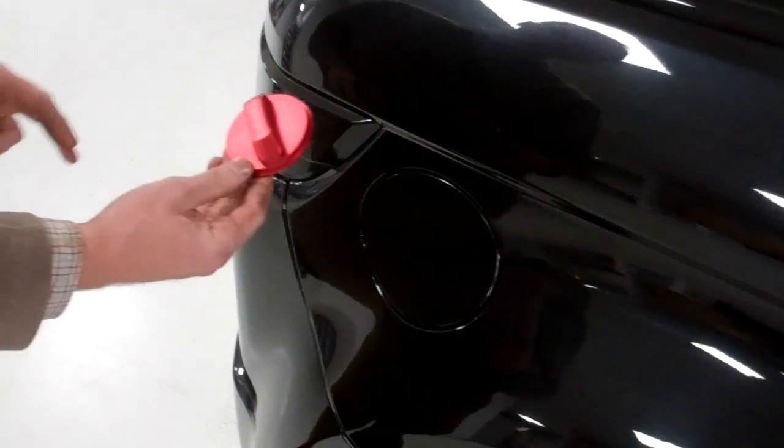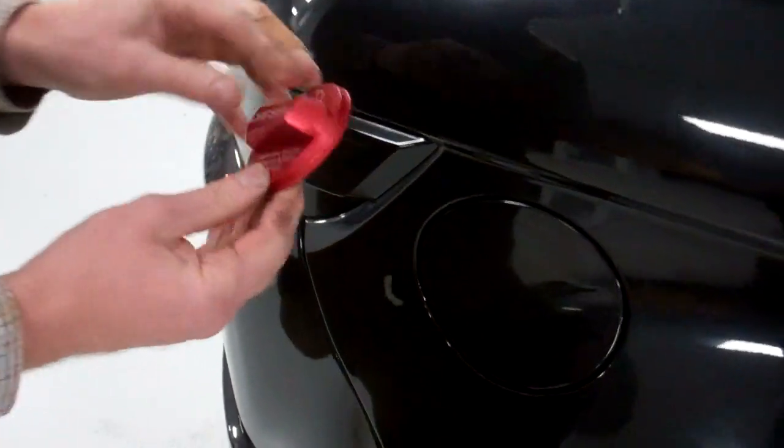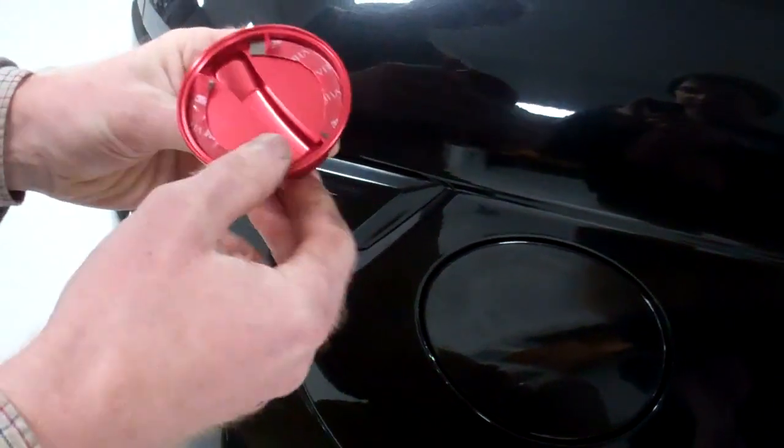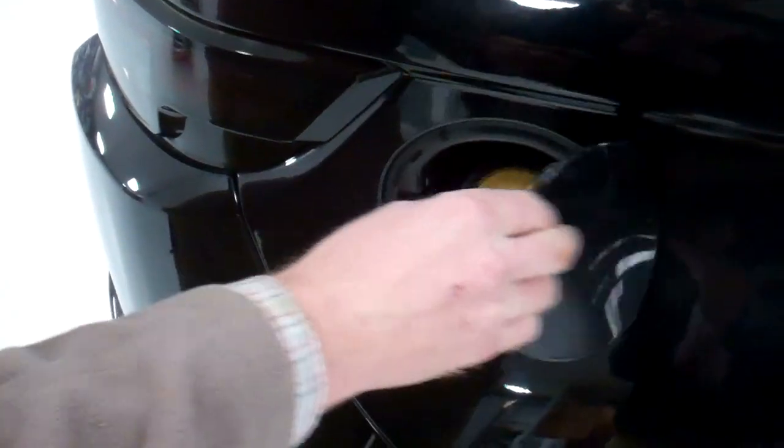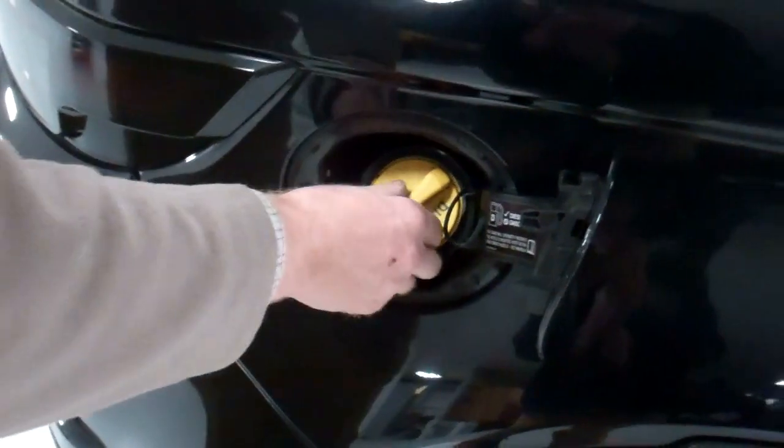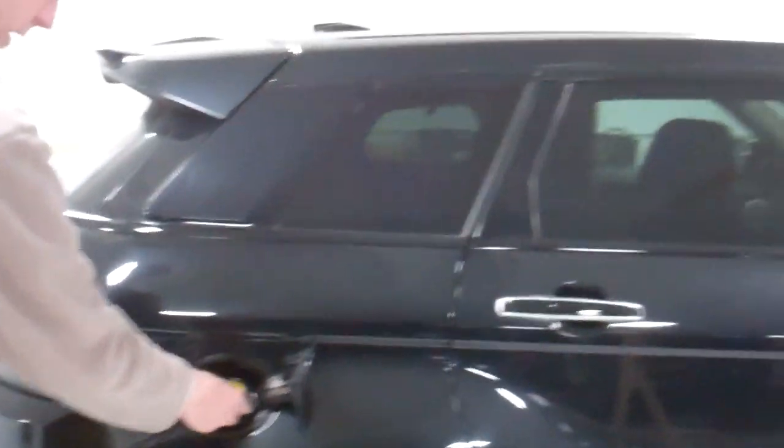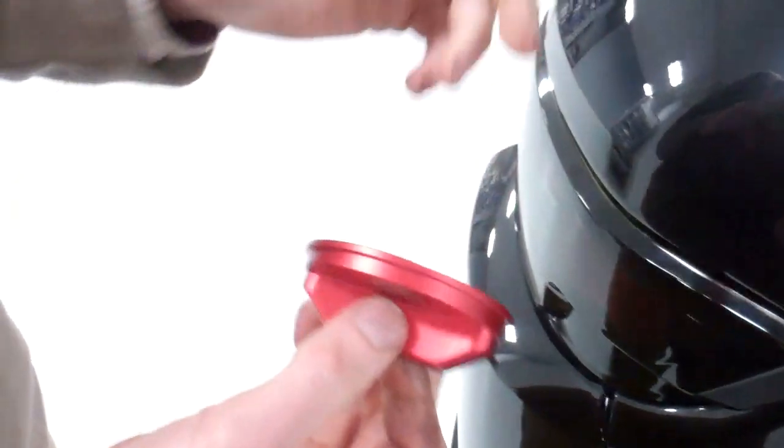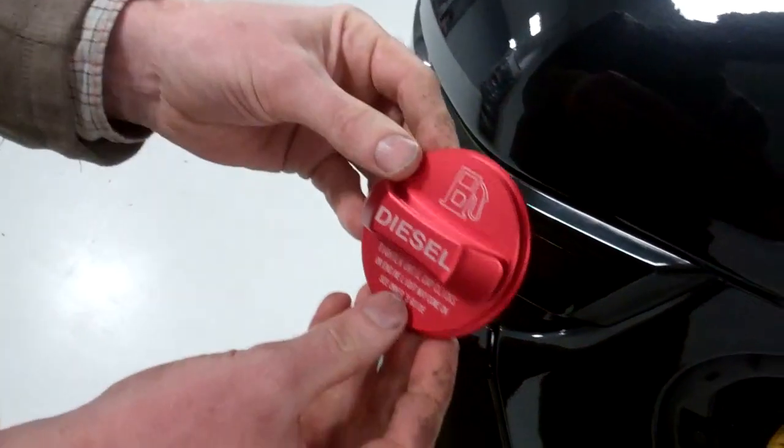We're going to fit the alloy fuel cap cover. The alloy is made from billet aluminum, machined fuel cap cover. This is for diesel. This cover is for an Evoke, but it's the same for loads of cars from Jaguar XF and others. I'll put the list up there.